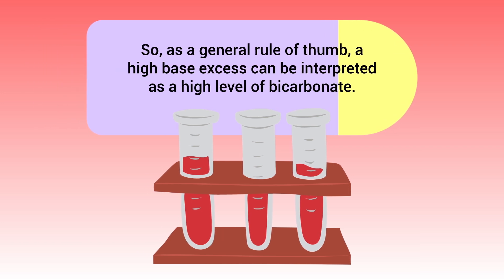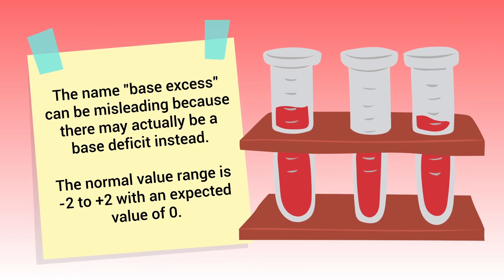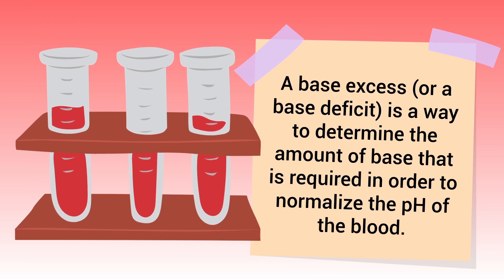As a general rule of thumb, a high base excess can be interpreted as a high level of bicarbonate. The name base excess can be misleading because there may actually be a base deficit instead. The normal value range is minus 2 to plus 2, with an expected value of zero. A base excess or base deficit is a way to determine the amount of base required to normalize the pH of the blood.